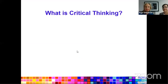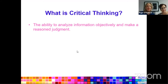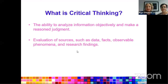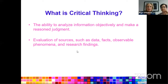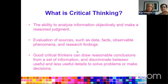So the main question is: what is critical thinking? Critical thinking is essentially the ability to analyze information objectively and to make a reasoned judgment. Critical thinking allows us to evaluate all sources and all the information we have on a certain topic. We look at the data, the facts, observable phenomena, and research findings. People who are good critical thinkers can draw reasonable conclusions from a set of information.